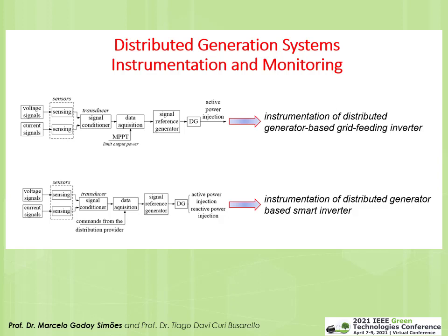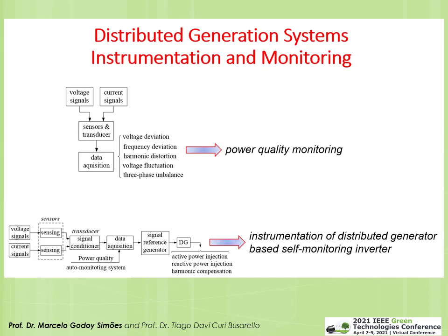In distributed generation systems, we need a lot of instrumentation and monitoring. Here we see the instrumentation of a DG-based grid-feeding inverter, where voltage and current signals are acquired by the system to perform maximum peak power tracking. The bottom of the figure shows instrumentation of a DG for a smart inverter, where we may have commands from the utility to enable active power injection or reactive power management.